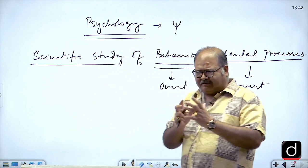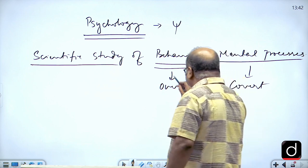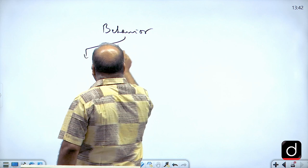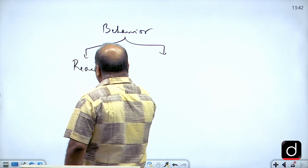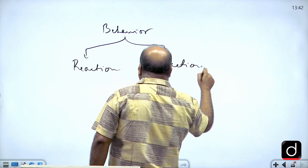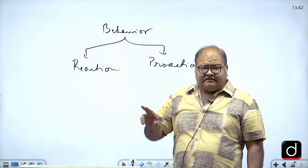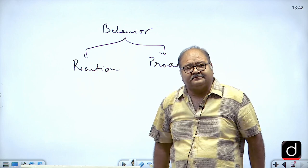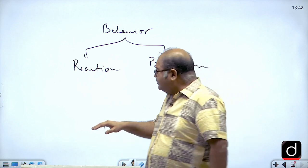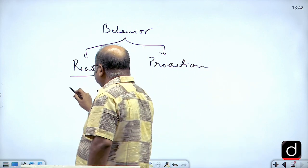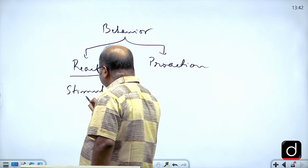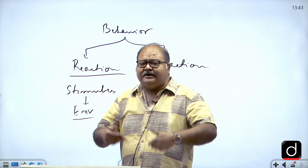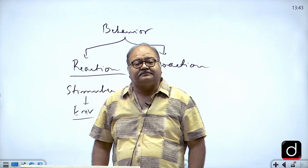The object of study of psychology is human behaviour, and we can talk of two forms of behaviour. Your behaviour may be a reaction or it may be a proaction. It can either be a reaction given to a stimulus in the environment, or a proaction in the absence of any stimulus. For example, as the teacher enters the class, you react by wishing the teacher good morning — that's a reaction.